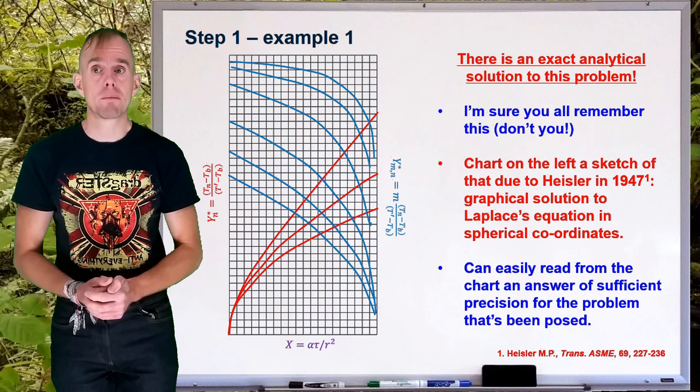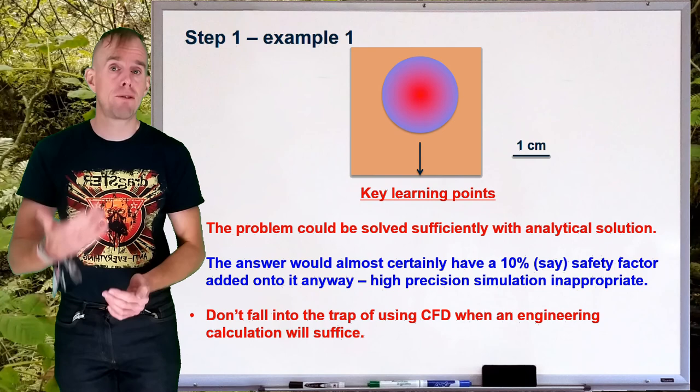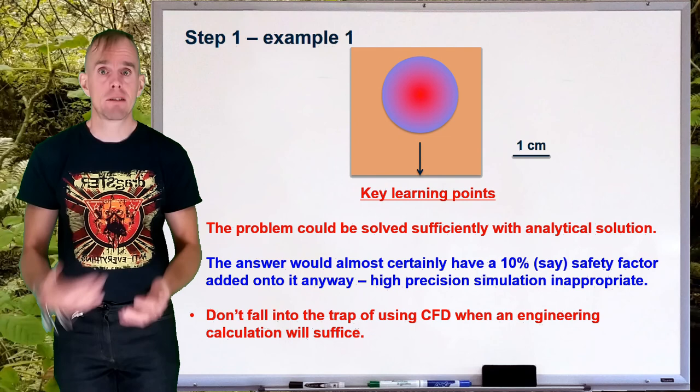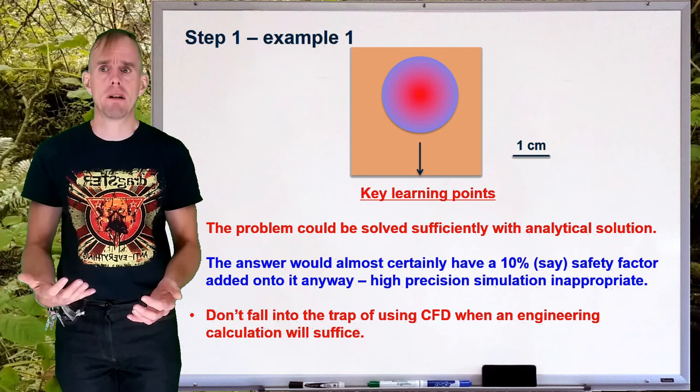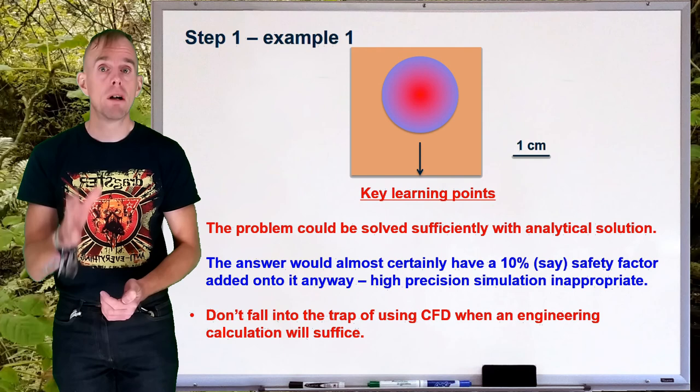So, in this example, we've got some key learning points to think about. The key learning points here is that the problem can be solved sufficiently with an analytical solution. The answer that you're aiming for because it's an engineering use, you're cooling bearings down, you're probably going to factor in a safety factor anyway, 10% extra residence time. And so, a high precision simulation actually is inappropriate. So, key learning point of all, don't fall into the trap of using CFD when an engineering calculation will suffice. Many people do, don't be one of them.